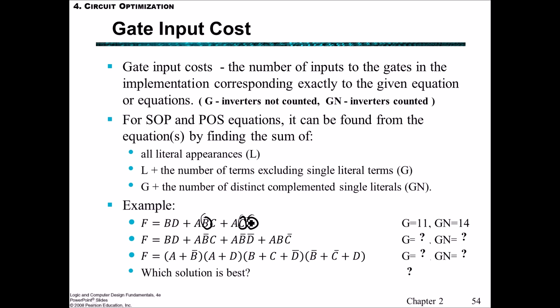For the second example, we can go through first and count the literals, which equals eleven. And then G being eleven plus the number of terms that are not single literals. So that's four more, giving fifteen. And then GN includes the complemented single literals. That's four more, so nineteen.